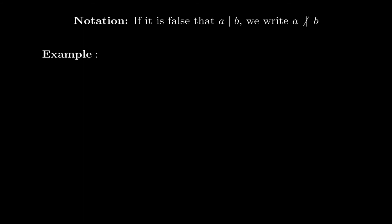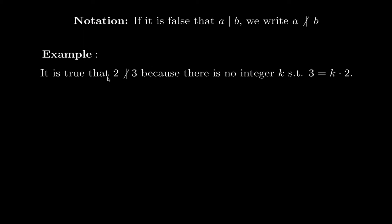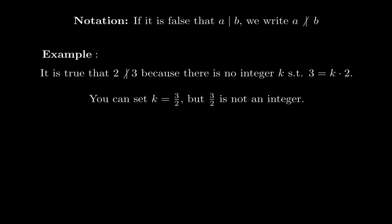For example, it is true that 2 does not divide 3 — 2 doesn't go exactly into 3 — because there is no integer k such that 3 is a multiple of 2. You could set k equal to 3/2 and the equation would be satisfied, but 3/2 is not an integer. That's what's important: k must be an integer, so 3 must be an integer multiple of 2 for divisibility to hold, and it isn't.